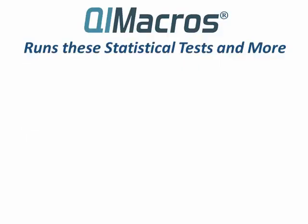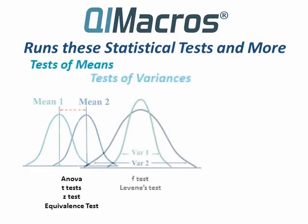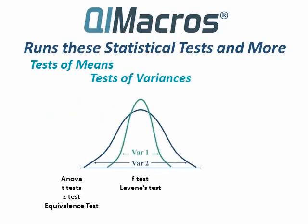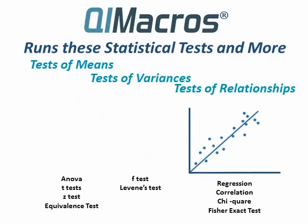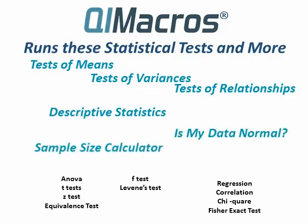QI Macros runs these statistical tests: tests of means like ANOVA and T-Tests, tests of variances like F-Tests, and tests of relationships like regression and chi-squared. QI Macros can also run descriptive statistics, determine if your data set is normal, and calculate sample sizes.